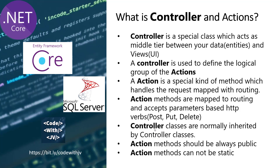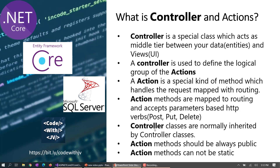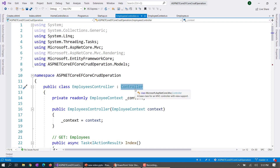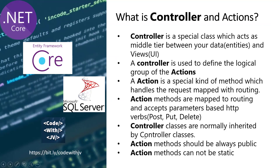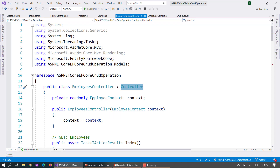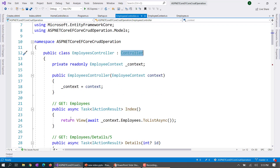Action methods are mapped with HTTP verbs. The default HTTP verb is GET, and the other three are POST, PUT, and DELETE. Controller classes normally inherit from the Controller base class — here you can see it inherits from Controller. There are two limitations of action methods: first, an action method must always be public, and second, an action method cannot be static.